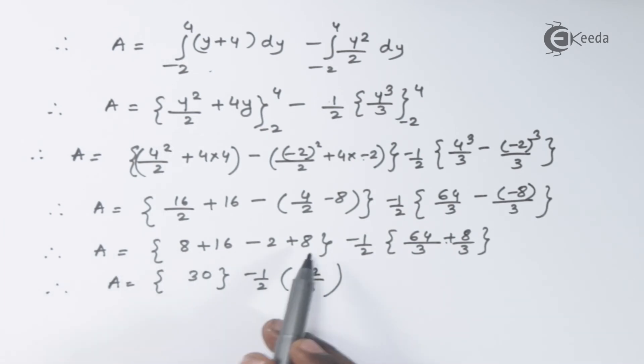In the next step, we have 8 + 8 = 16, plus 16 = 32, minus 2 will give you 30. And minus half of 72/3. So we have 30 - 12, which is equal to 18 square units. This is our final answer.